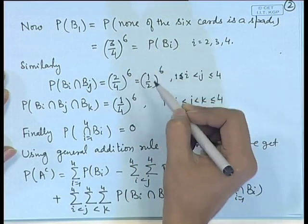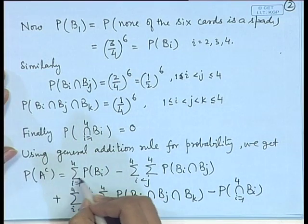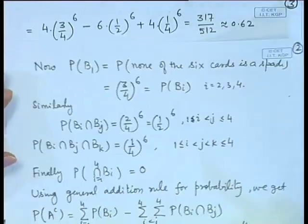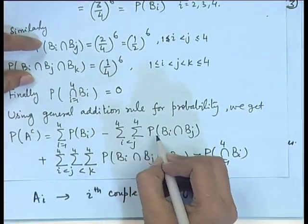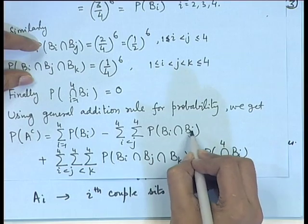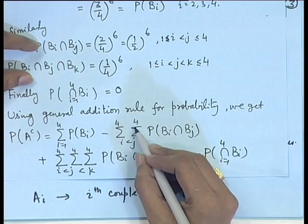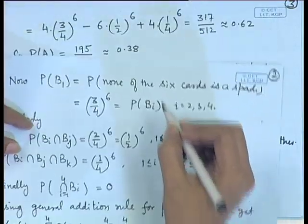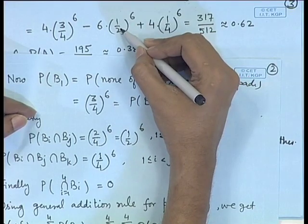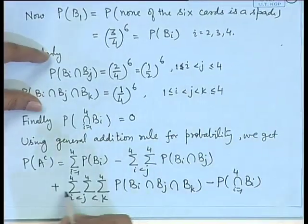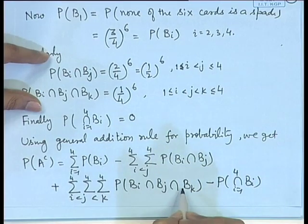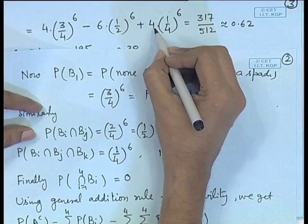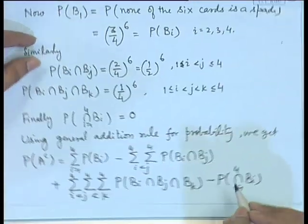Substituting into the general addition rule: there are 4 terms of P(B_i), each equal to (3/4)^6. The second term involves 4C2 = 6 intersections of 2 events, each with probability (1/2)^6. The third term involves 4C3 = 4 intersections of 3 events, each with probability (1/4)^6. The last term is 0.